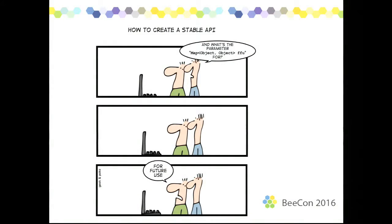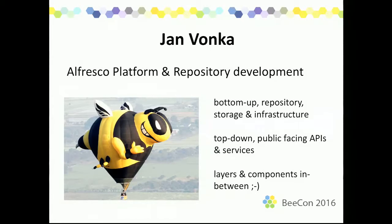I've thrown on a slide about how to create a stable API — there's a map with a parameter called FFU, and the guy at the bottom says 'for future use.' I thought I'd throw that into the slides. My name is Jan Vonker. I've been working at Alfresco many years, primarily on the repository and the platform as a whole, working from the bottom — the persistence layer and the storage infrastructure — upwards. Right now I'm in a team working on the public-facing API, looking at it more from a top-down perspective.